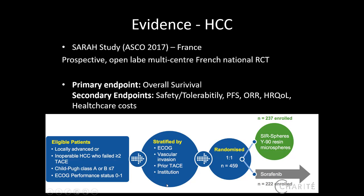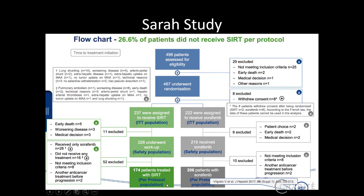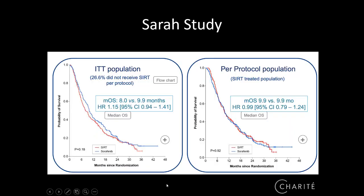They used the classic BSA method for dosimetry. Looking at the flowchart, 496 patients were eligible, and 467 were randomized. In the SIRT arm, a lot of patients were excluded — 52 patients were not treated due to critical anatomy, lung shunting, and other reasons. In the sorafenib arm, the majority of patients were treated. When looking at the overall survival charts, there was no significant difference between the SIRT and sorafenib groups — neither in the intention-to-treat population nor in the per-protocol population.